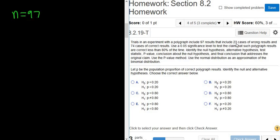What is our successes? Well, we have to keep reading. It's going to be either 23 or 74. Use a .05 significance level, that's our alpha, to test the claim that such polygraph results are correct less than 80% of the time. Okay, so success is being correct, so 74 is our successes.